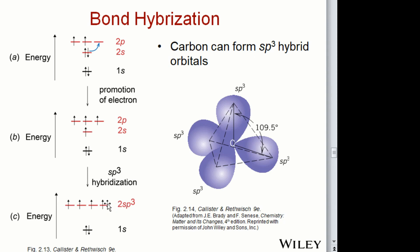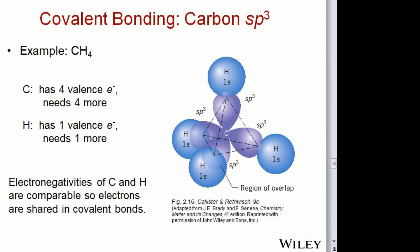Instead of having two separate orbitals, you get this hybridization called the sp³ hybridized orbital. An example is CH₄: carbon has four valence electrons and needs four more to satisfy; hydrogen has one valence electron available and needs one. Sharing occurs at each of the four corners of this tetrahedron and they can both get their bonds satisfied. This is a nonpolar covalent bond; for water you can have a polar covalent bond.